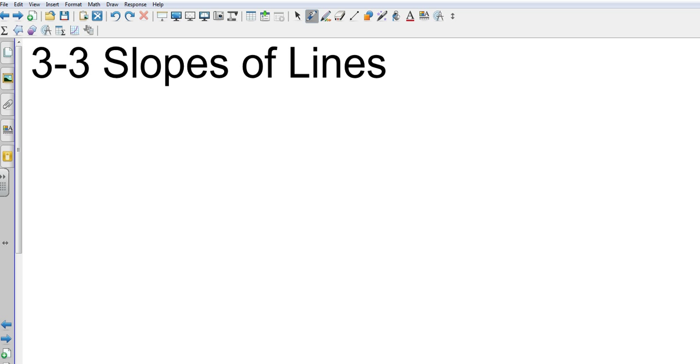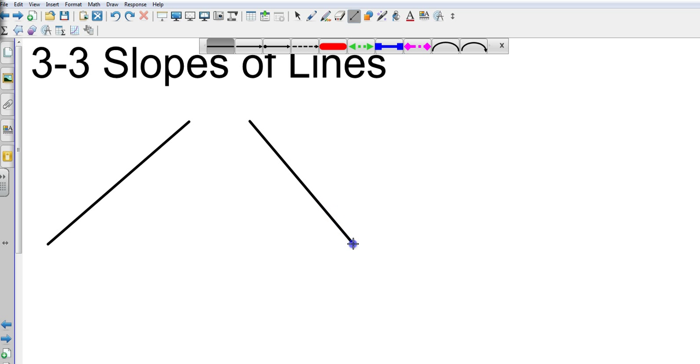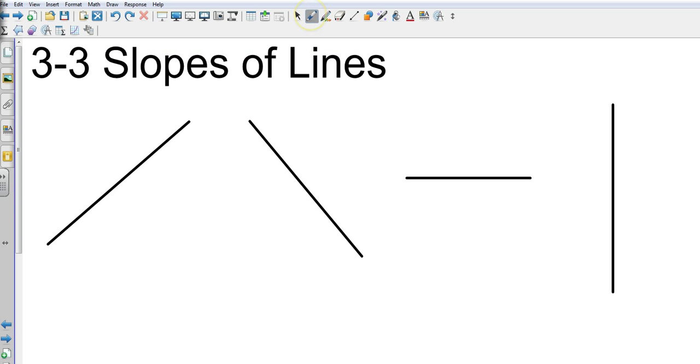So let's look at those four relationships. So if I have a line that goes from left to right and it rises, I'm going to draw all the lines first. I've got one that goes up from left to right. I've got one that goes down from left to right. I've got one that goes straight across from left to right. And I'm going to have one that goes completely vertical from left to right.